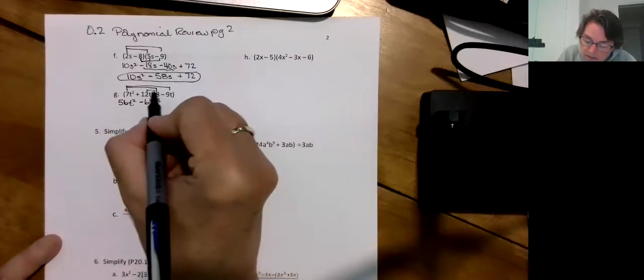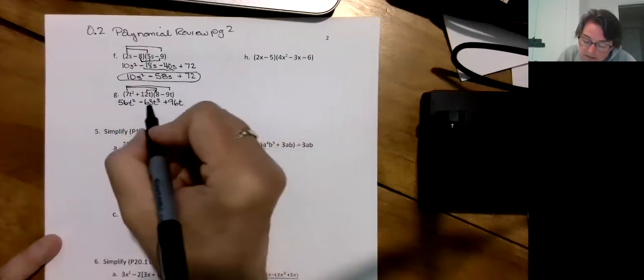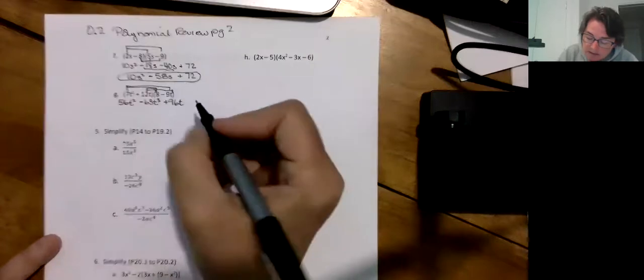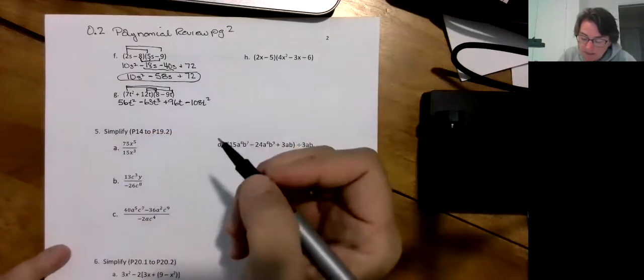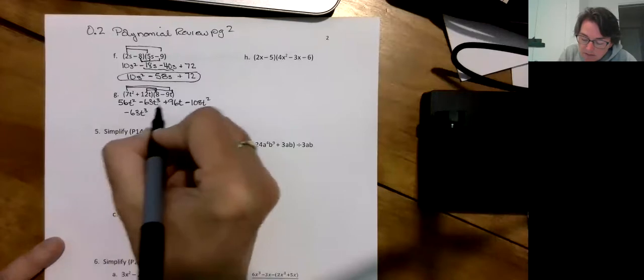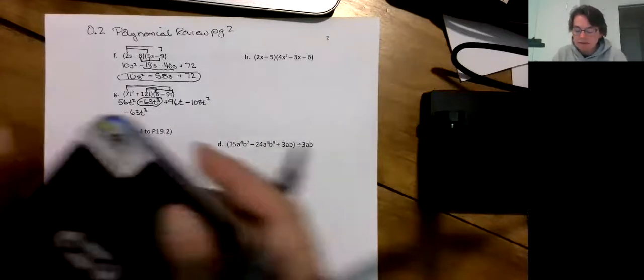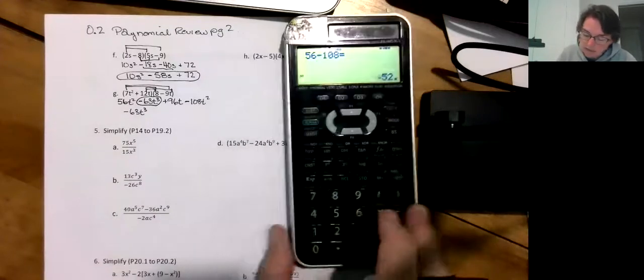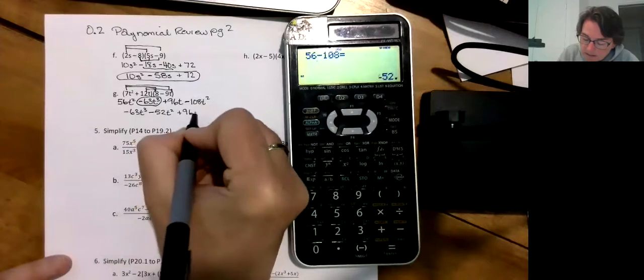7t squared times minus 9 is minus 63t squared. And then I've got 12t times 8t and then 12t times minus 9 is minus 108t. Now let's take a look. We have t cubed so minus 63t cubed, descending order that comes first. Now we've got 56 and minus 108, minus 52t squared plus 96t.